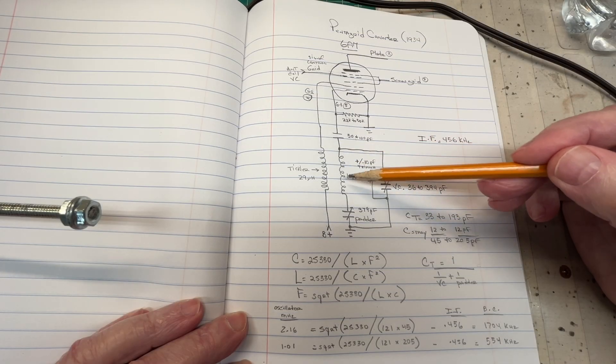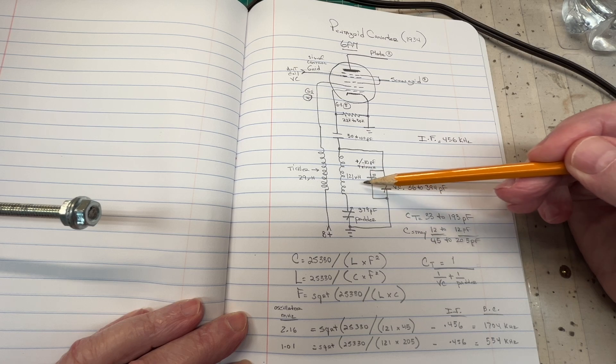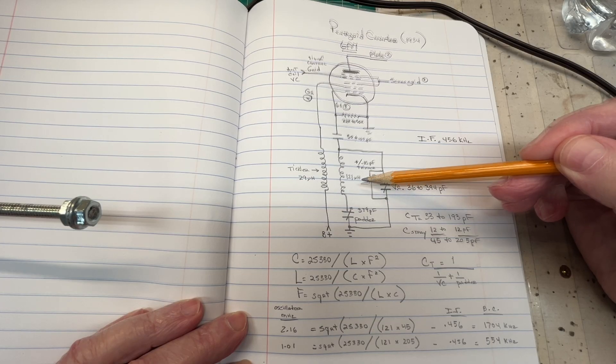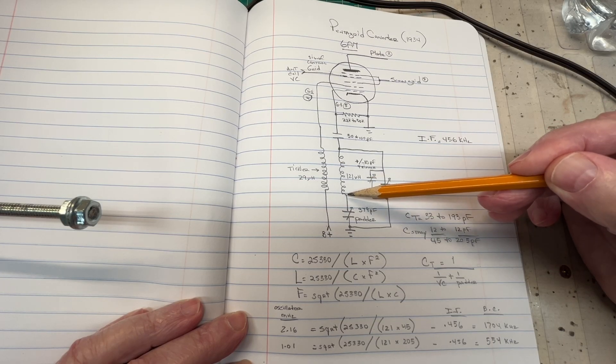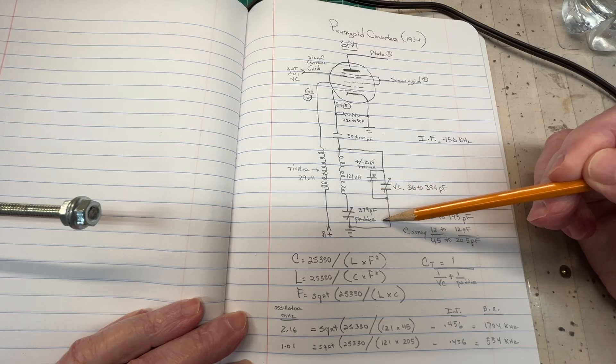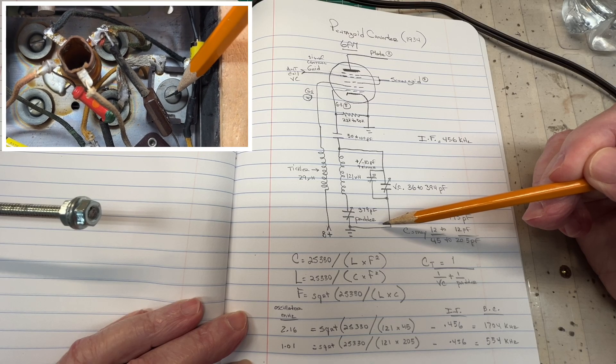Anyway, that feeds down to the, I'll call it the primary side of the inductor that we just looked at. It reads 121 microhenries, and you can see the other side of that particular winding feeds over to a padder capacitor. Push that up on the screen so you can see that again.